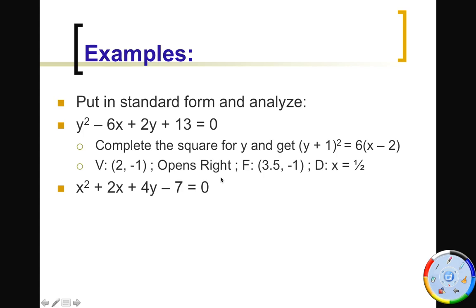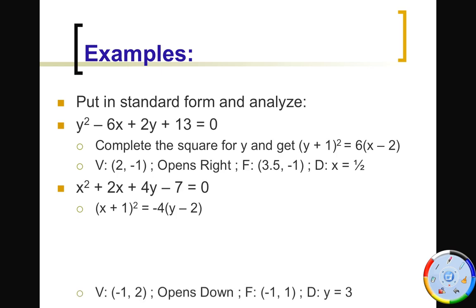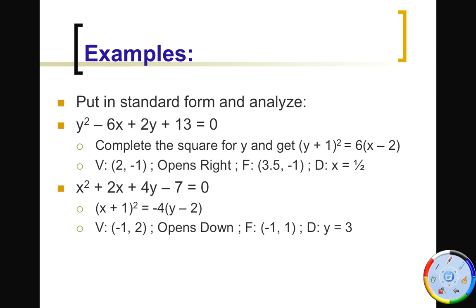Try the next problem on your own and come back to me. You should get (x + 1)² = -4(y - 2). The vertex is (-1, 2), it opens down because of the -4, the focal point is (-1, 1), and the directrix is y = 3.